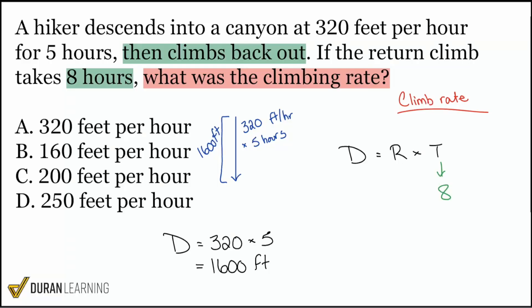Now here's the other question though. What's the distance? What is the distance that I'm plugging in? If you're saying 1600, absolutely correct. Because remember, we descended into the canyon and then we climbed out. That was a return climb. So going down and then going right back to where we started, we can safely assume it's the same distance. So that's going to be 1600.